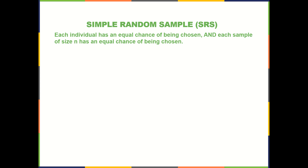A simple random sample is the very best one — the GOAT, greatest of all time, sampling method. It has the quality of being random in that each individual has an equal chance of being chosen, but it has the added benefit that each sample of size n also has an equal chance of being chosen.